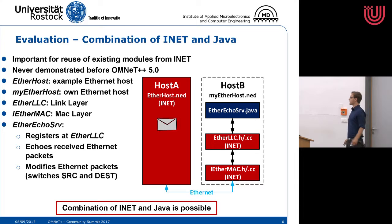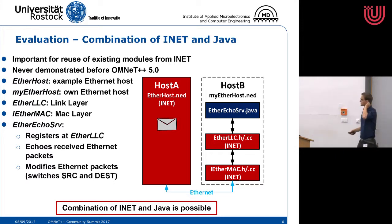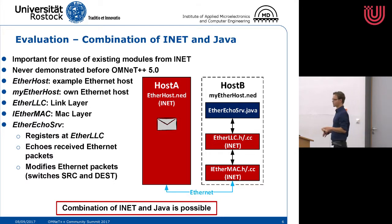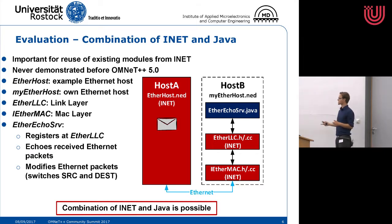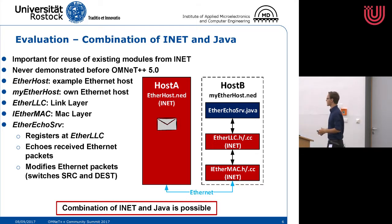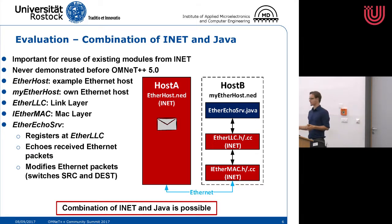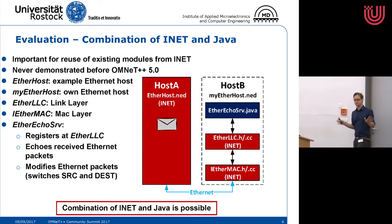We have done a few evaluations, and I will show one of them which is, from my point of view, the most important one — because it's the combination of existing modules from INET and Java simulation models. This is motivated on the first slides: it is very important that if we want to use existing modules, we don't want to build up everything from scratch and only use the simulation kernel — we want to use the entire INET library. And as far as we know, this was never demonstrated with OMNeT++ before.